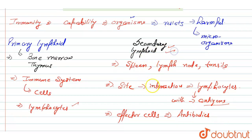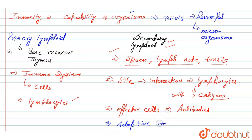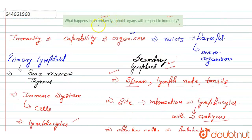So this is the functioning of the secondary lymphoid organs with respect to immunity. The lymph nodes, spleen, and tonsils act as sites where this interaction takes place. Additionally, the secondary lymphoid organs are also where the adaptive immune response is first initiated or generated. This is all about secondary lymphoid organs with respect to immunity. Thank you.